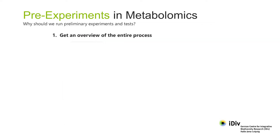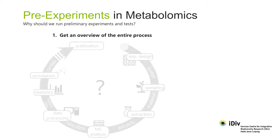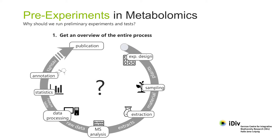Reason one: to get an overview of the entire process. A metabolomics workflow has many steps, and most of these steps have to be adapted specifically for each different project. Preliminary experiments are especially useful for familiarising the research team with where the data comes from and how it's structured, particularly when the approach is more or less new to the team.